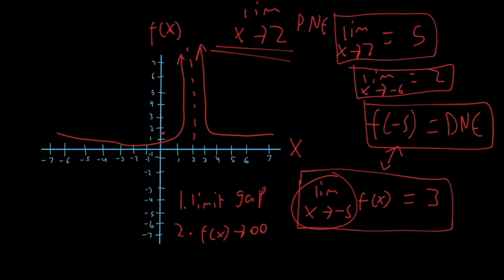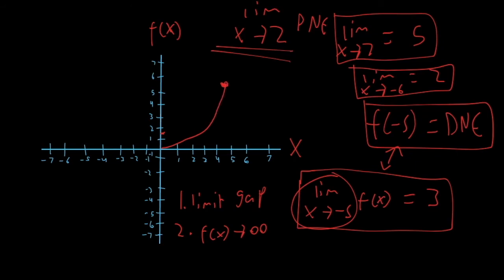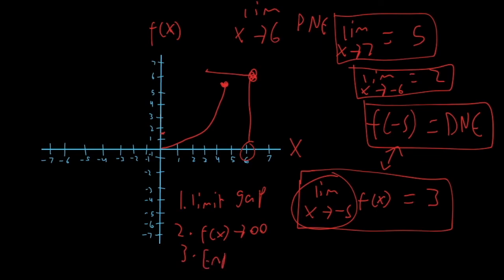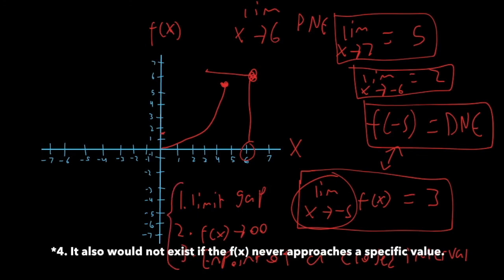The third case where the limit won't exist is if it reaches an endpoint and you're asked to go beyond that endpoint. For example, if you have a curve that just stops at a certain point, and I ask for the limit as x approaches six but the curve ends before six — there's no curve there, we can't measure it. So if there's an endpoint of a closed interval, that is another situation where the limit would not exist.